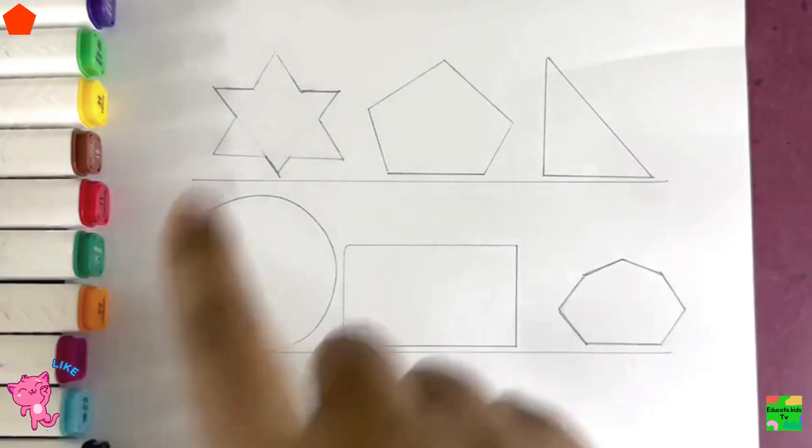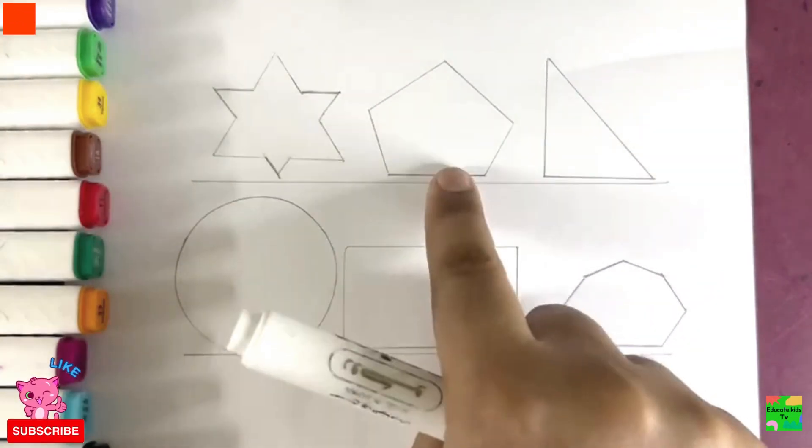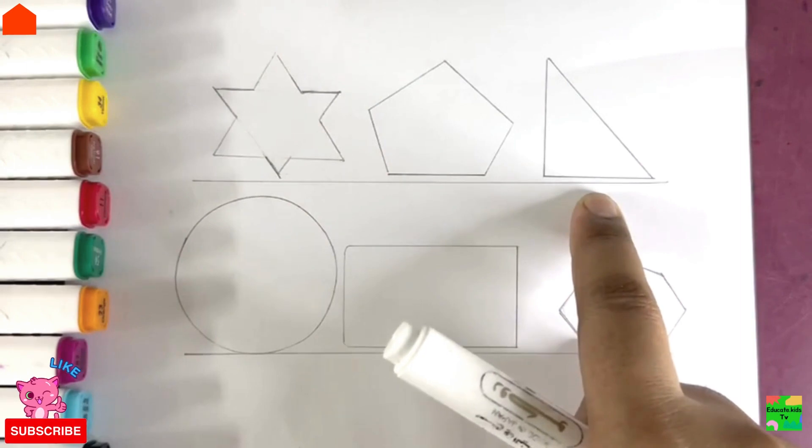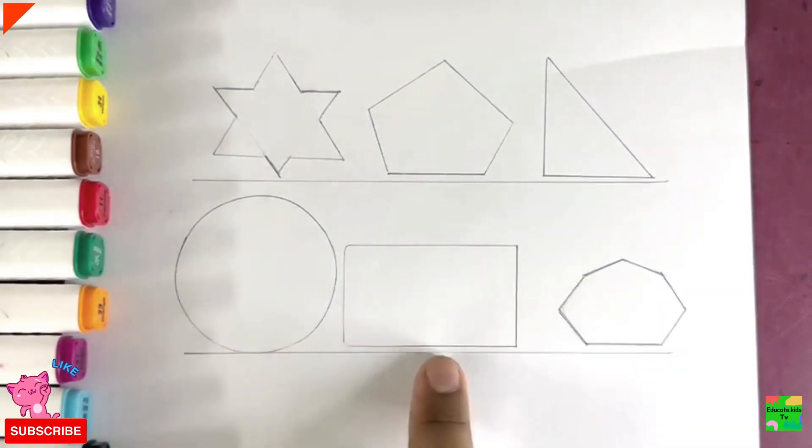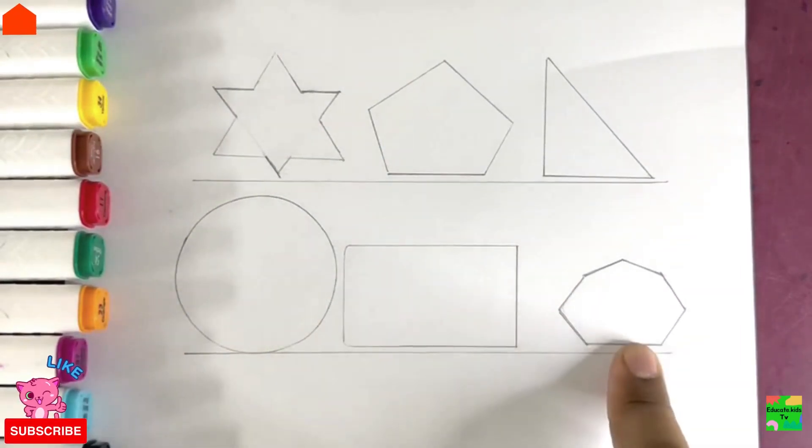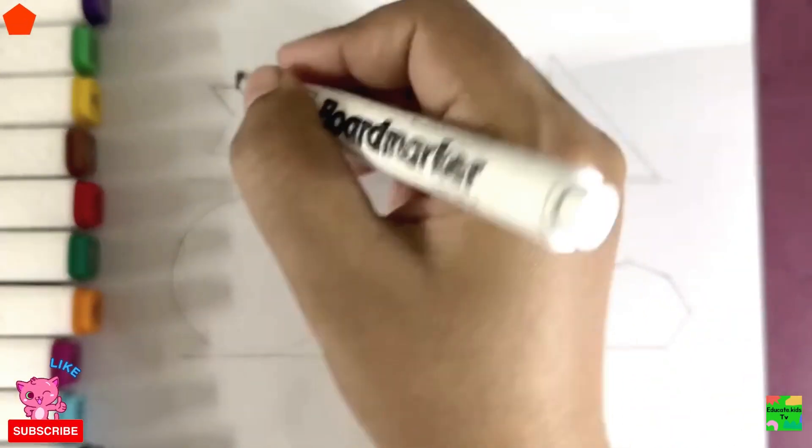These are some shapes. Star shape, pentagon, right-angled triangle, circle, rectangle, and heptagon. Hooray! Now let's draw them.